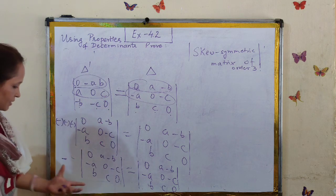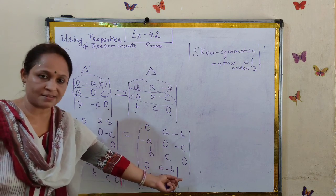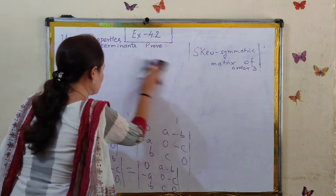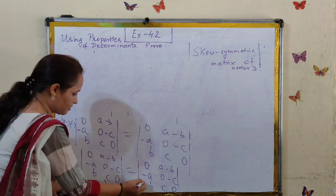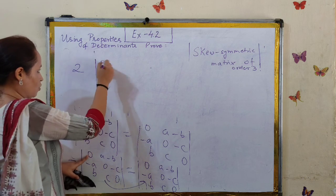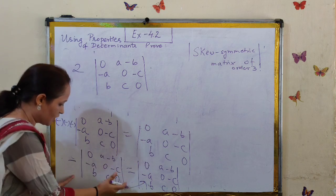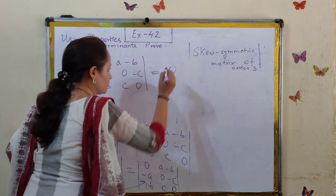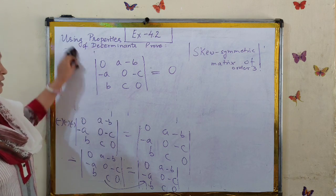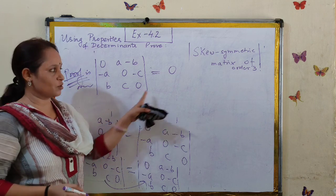Now that the entries on both sides are the same, we can bring this determinant to the other side. This determinant is negative, so shifting it gives plus. So we have 2 times the original determinant — 2 times delta — equal to zero. Dividing both sides by 2, we finally get that the determinant equals zero. The proof is complete, as this is exactly what we had to prove: the left-hand side determinant is equal to zero.